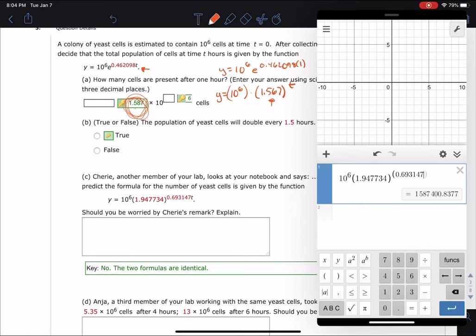And then if we try, we know it should double after 1.4, 1.5 hours. So we could check at 2.5 hours and put a multiplication sign in there, 2.5 hours. And we do get double our original value. We get double this value. So yeah, we're not worried. The two formulas are identical.